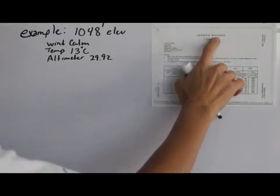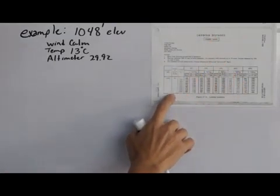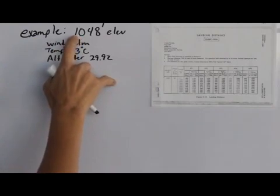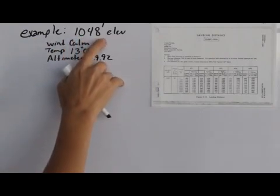We're looking at the landing distance chart out of the aircraft's POH performance section. And in our example, we're going to land at our airport, 1,048 feet field elevation.